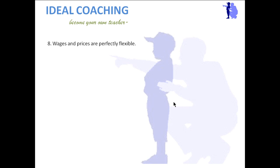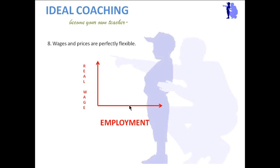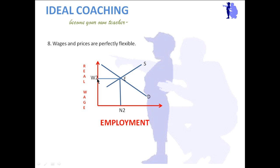This can be understood with a diagram. On the vertical axis are real wages and on the horizontal axis is employment. There is a supply curve and a demand curve, and their intersection point E is the equilibrium point where employment matches real wages. For example, at wages W2 and employment N2, production units are giving employment at those wages.